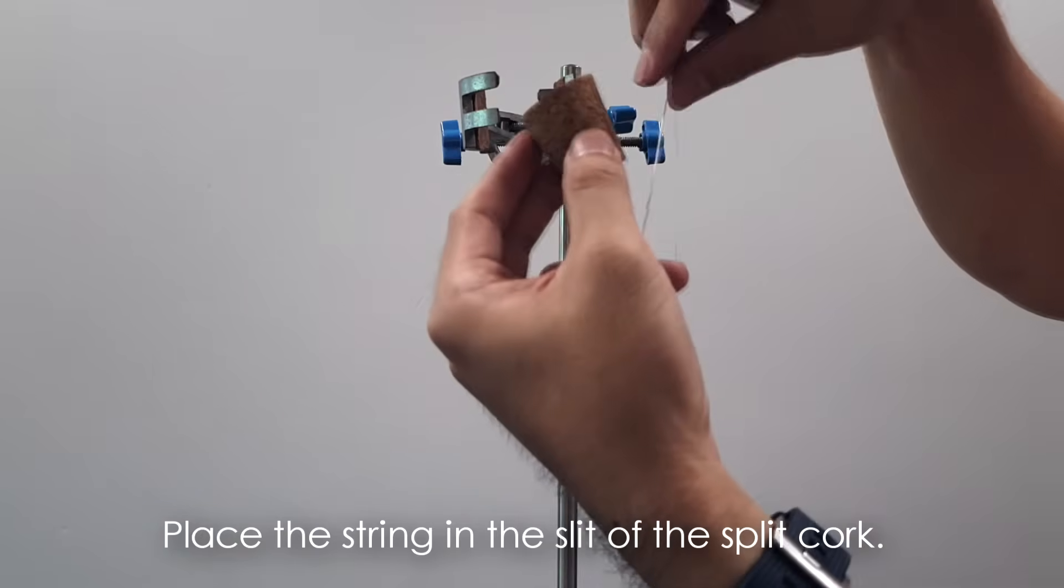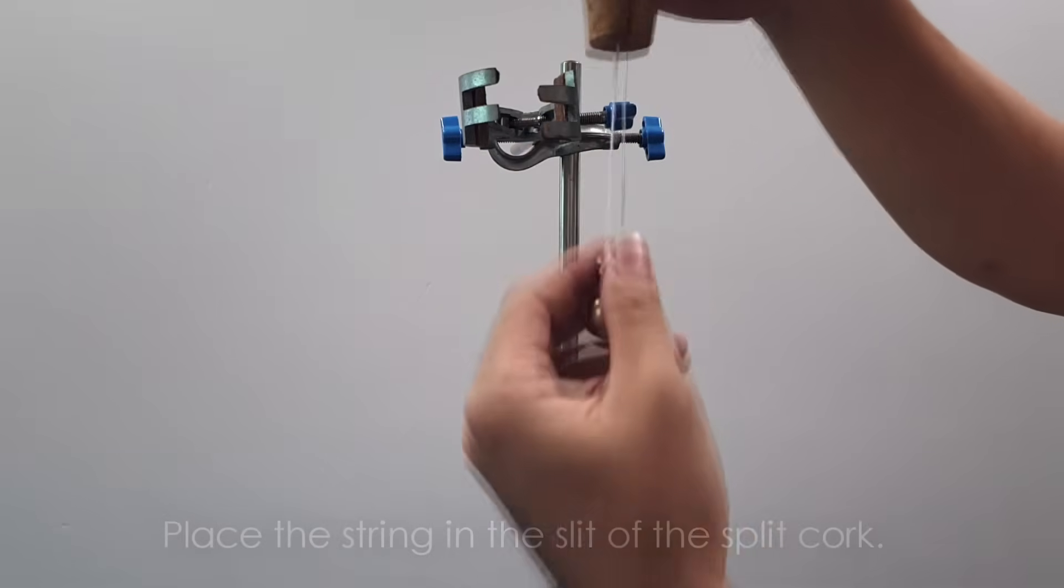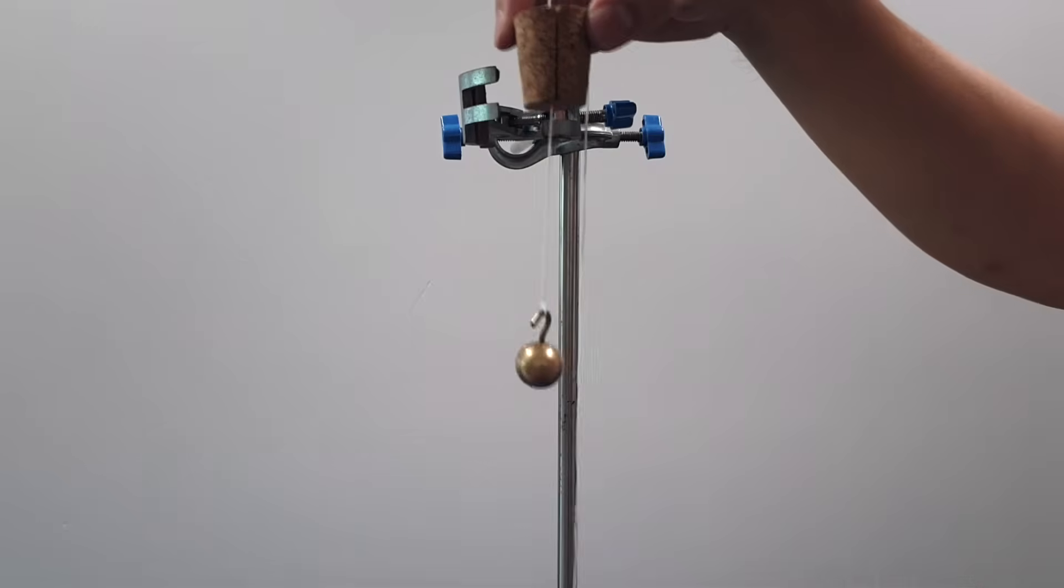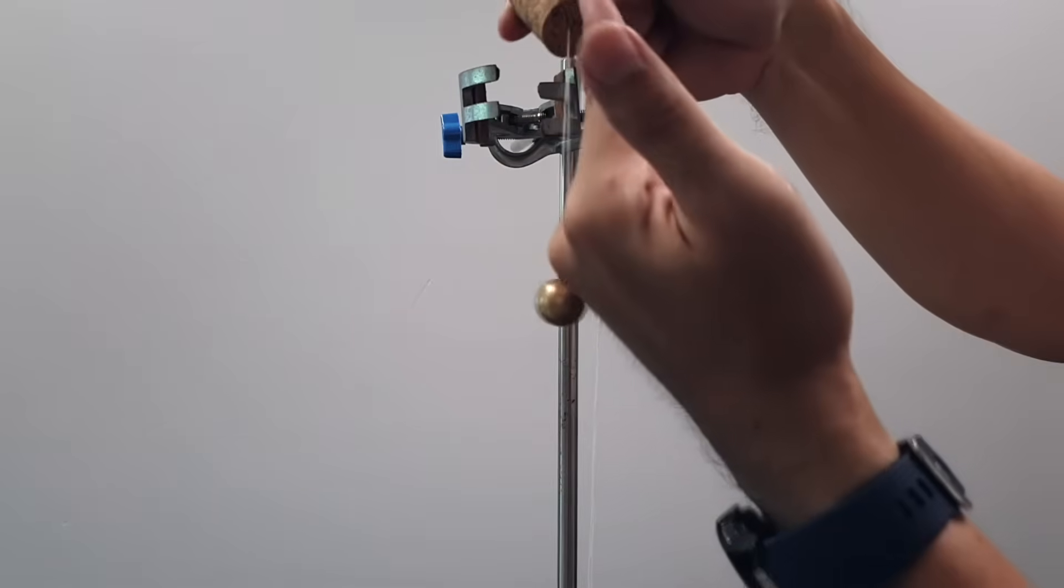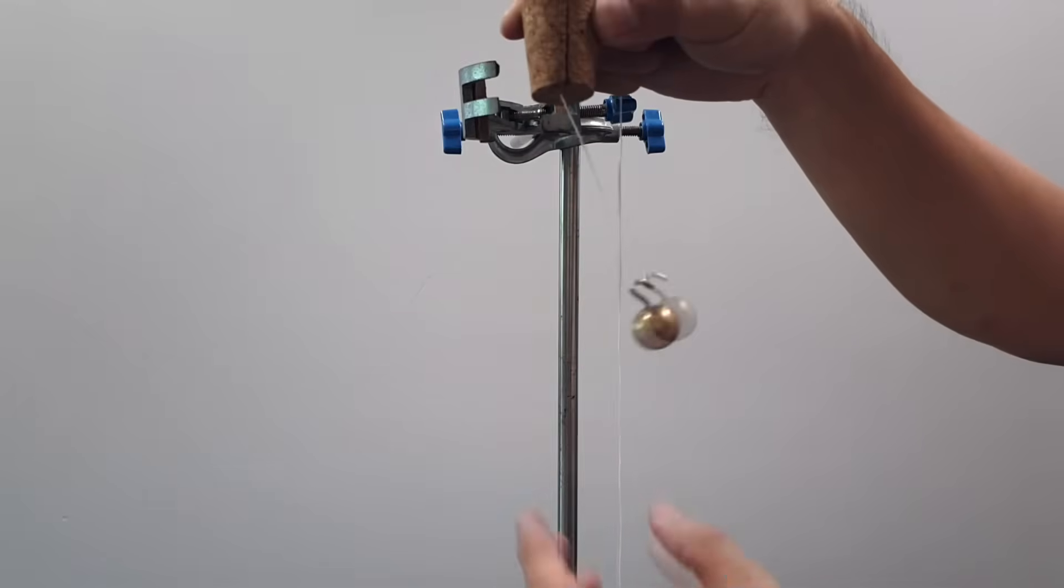So what you need to do is just place the string in the slit so as to secure the pendulum bob. Now just think of this: if the slit is in this direction, make sure that your swing, your oscillation, will be perpendicular to the slit.